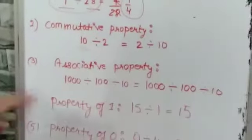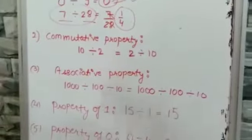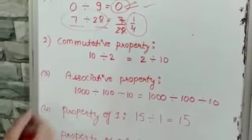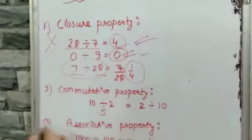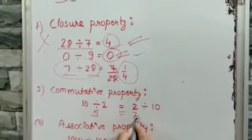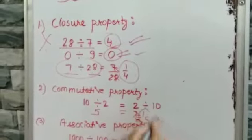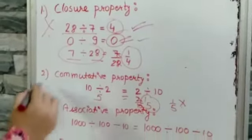Coming to the next property, commutative property says that a divided by b should be equal to b divided by a. Let's check it by taking an example. 10 divided by 2 is going to give you 5, but 2 divided by 10, that is 2 upon 10, will give you 1 upon 5. 1 upon 5 is again a fraction, that means it is not a whole number. So commutative property also does not exist under division.